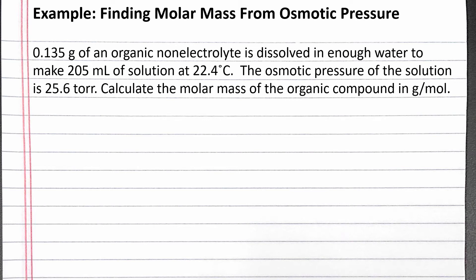In this example, we calculate the molar mass of an organic compound from the osmotic pressure of its solution. The problem reads: 0.135 grams of an organic non-electrolyte is dissolved in enough water to make 205 milliliters of solution at 22.4 degrees Celsius. The osmotic pressure of the solution is 25.6 torr. Calculate the molar mass of the organic compound in grams per mole.